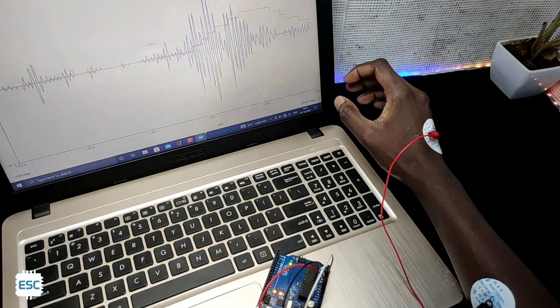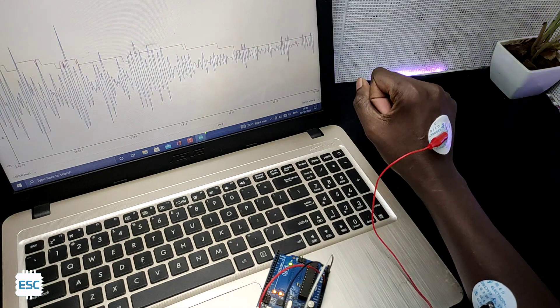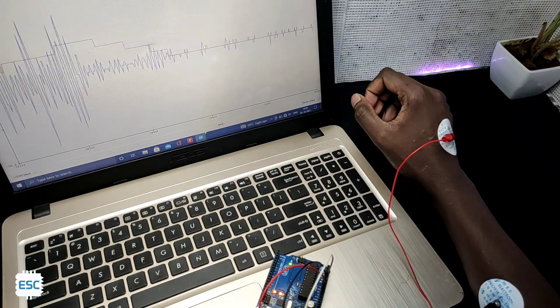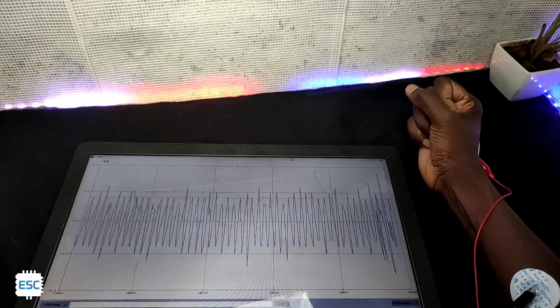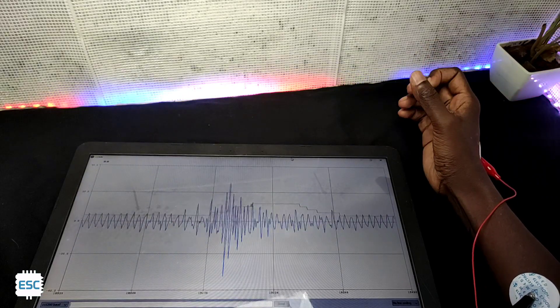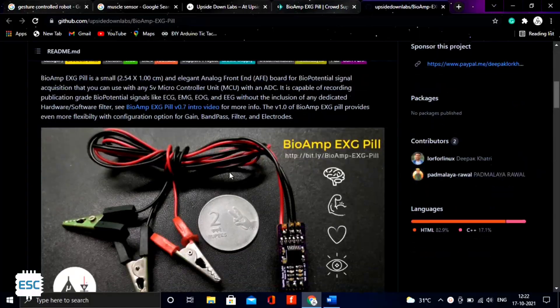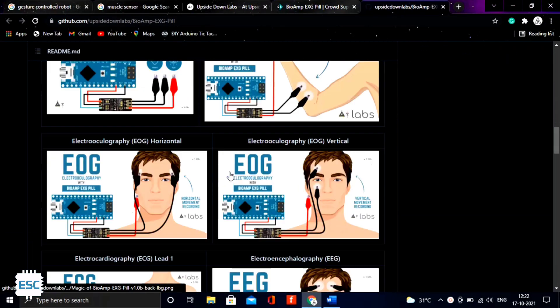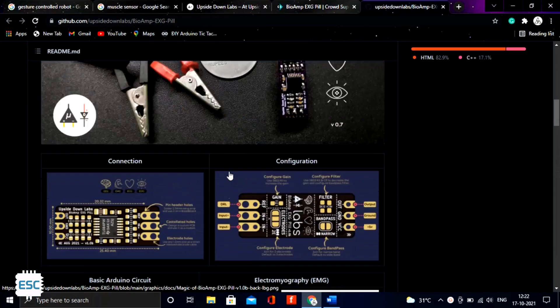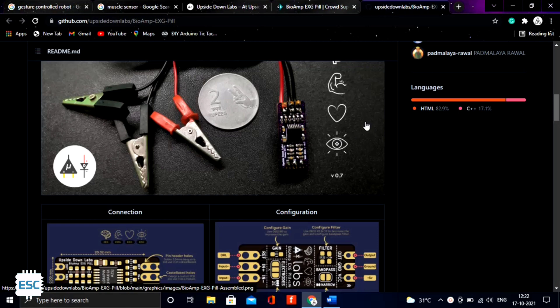In the same way, we can measure ECG, EOG, and EEG with this tiny board. In this video, I just tested the BioAmp EXG Pill. One more thing: this board is open source, so you can download all the circuits and code from their website. In my coming videos, I will make some projects with this awesome pill.